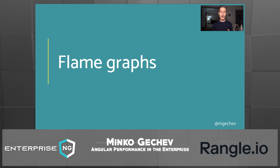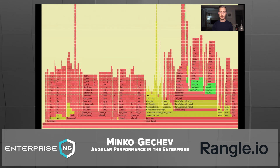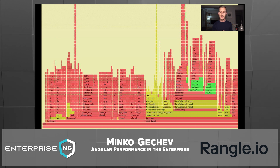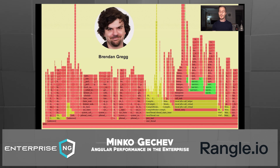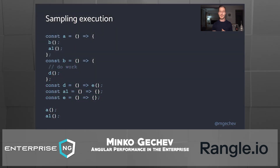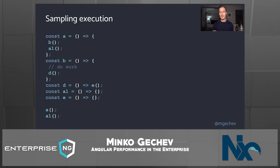Let us look at what flame graphs are and how we can read them. Here is an example of a flame graph — it visualizes the execution of a program over some time. Each rectangle's size is proportional to the number of times the corresponding call ended up being part of the call stack during the profiler sampling. Brandon Gregg, a performance engineer at Netflix, originally developed this visualization method of profiler output. Now let us trace the execution of a program and sample it to preview it with a flame graph, to get a better understanding of this visualization.